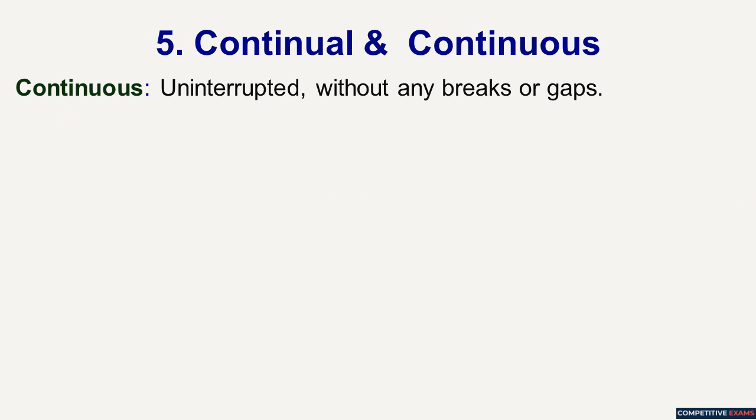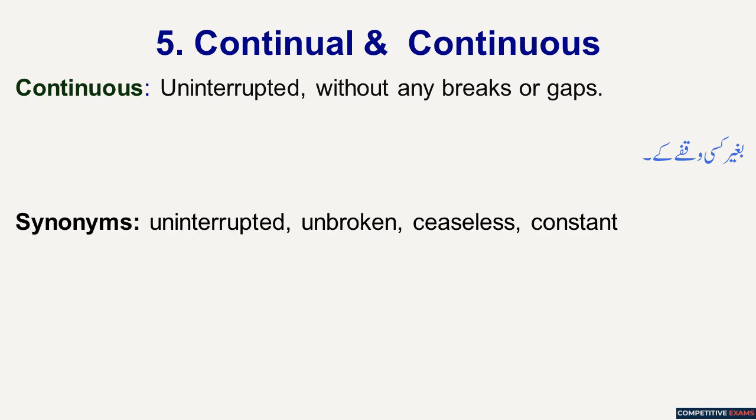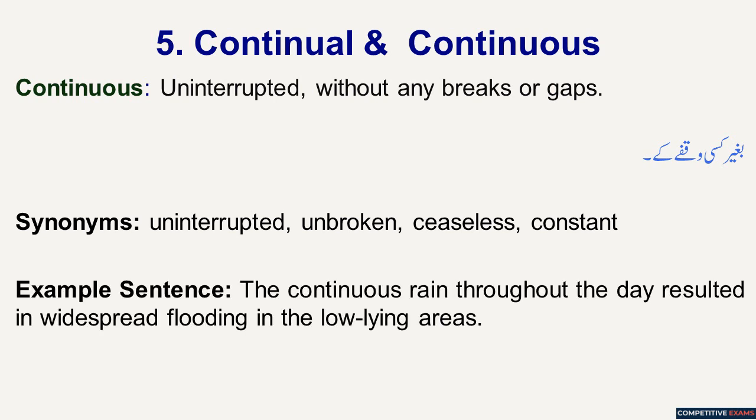Continuous means uninterrupted, without any breaks or gaps. Yani baghair kisi waqfe ke. Continual mein waqfa hota hai, lekin continuous mein koi waqfa nahi hota. Its synonyms are uninterrupted, unbroken, ceaseless and constant. Example sentence: The continuous rain throughout the day resulted in widespread flooding in the low-lying areas.